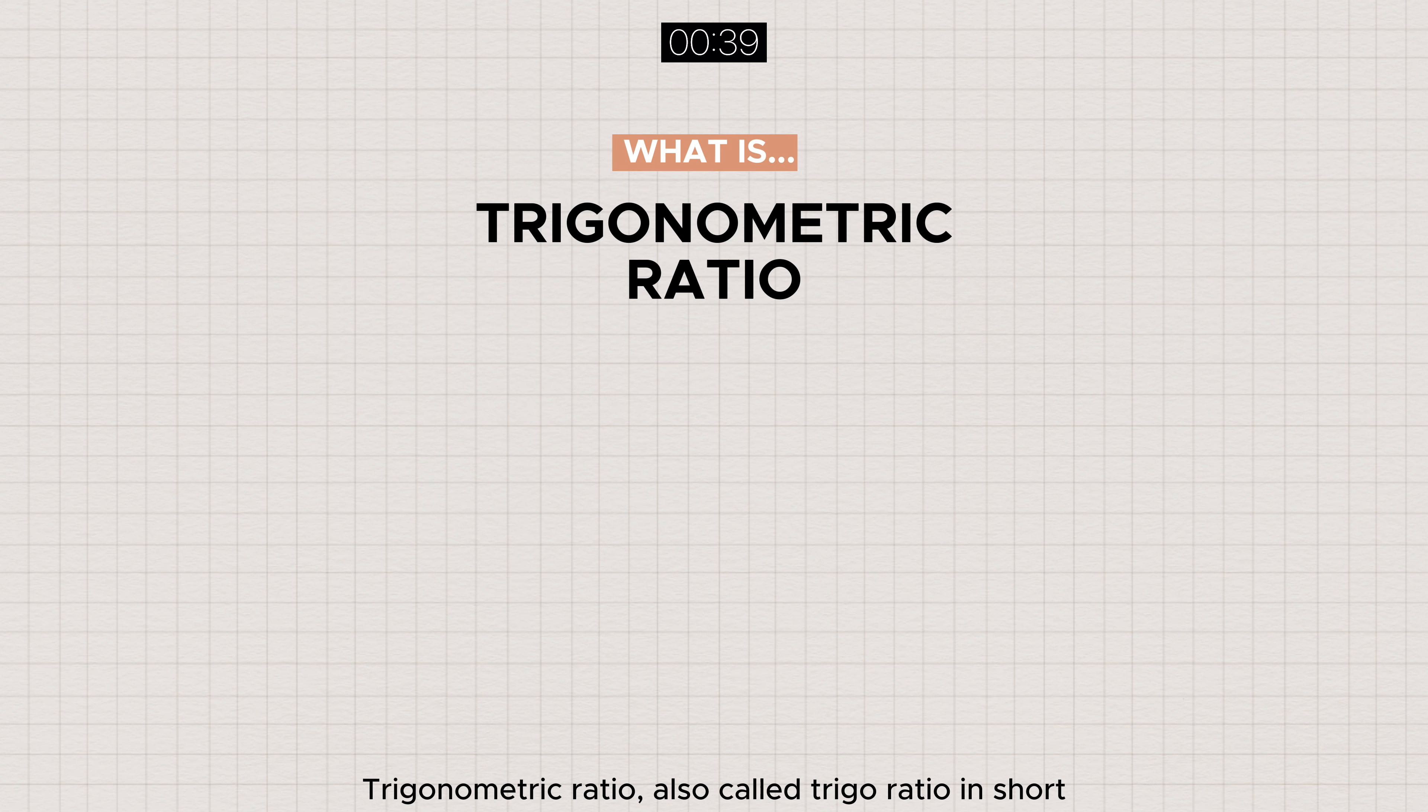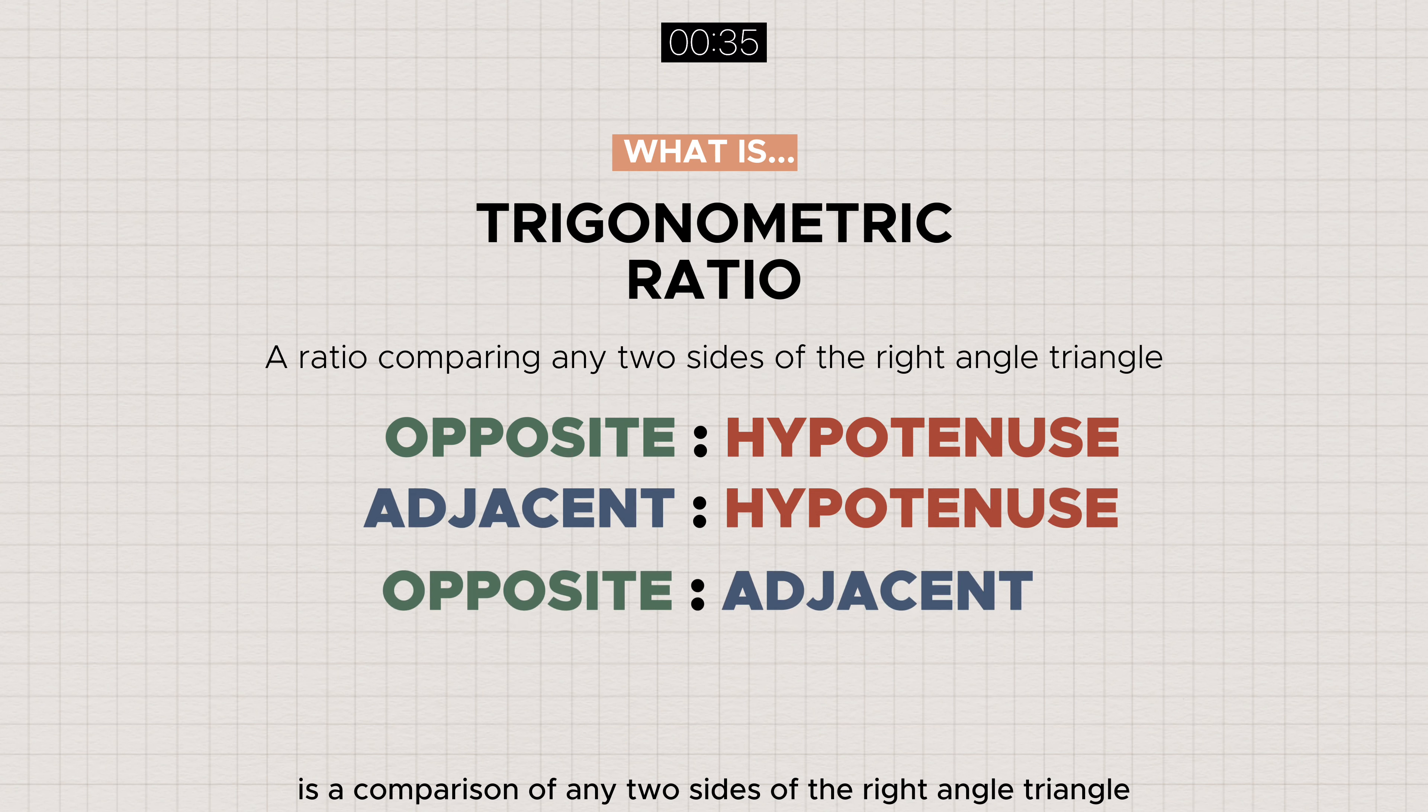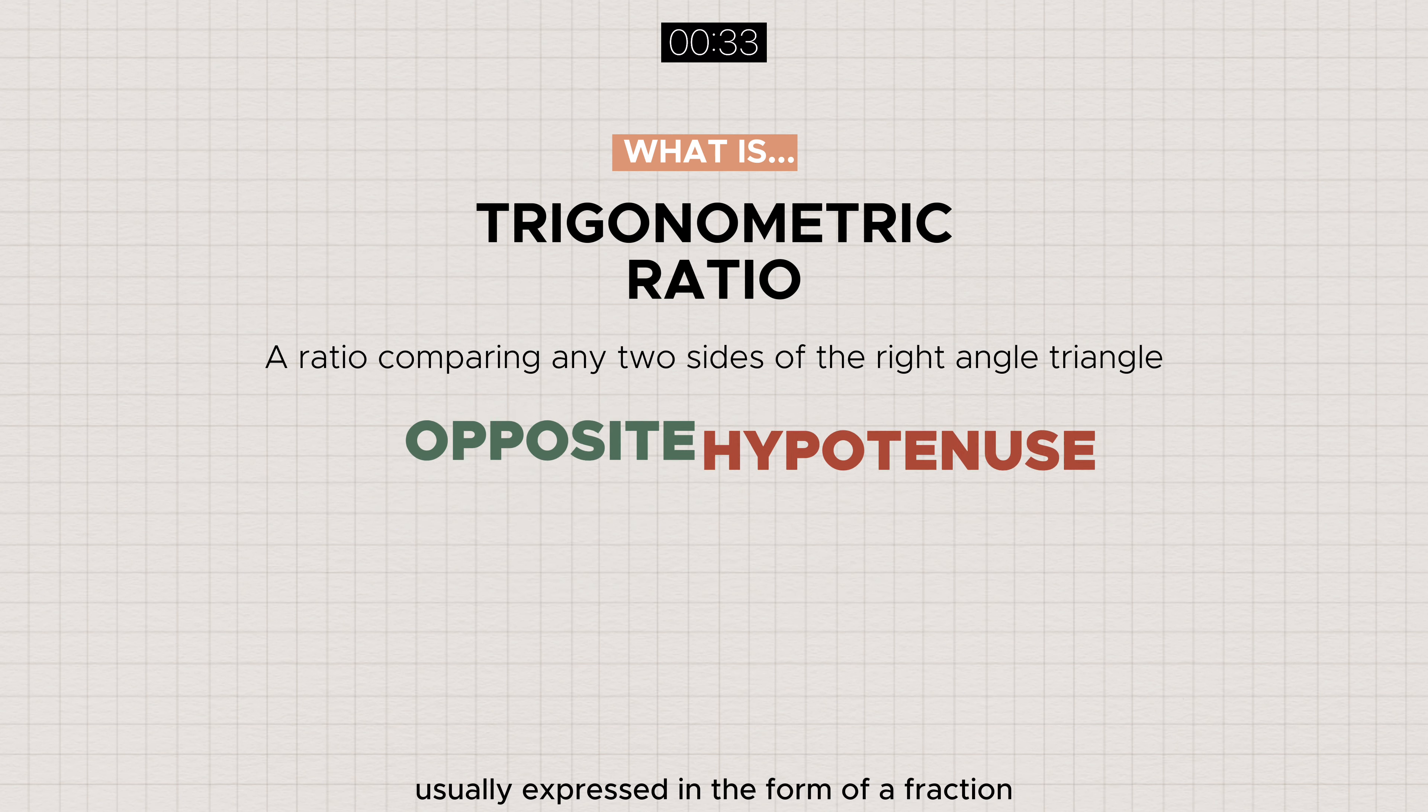Trigonometric ratio, also called trigoratio in short, is a comparison of any two sides of the right angle triangle, usually expressed in the form of a fraction.